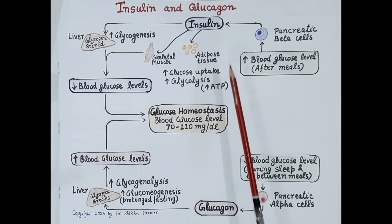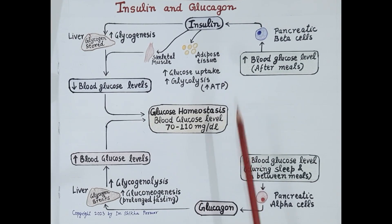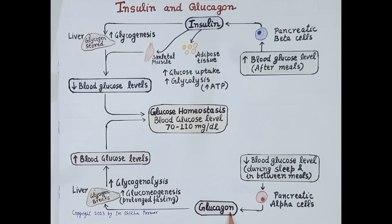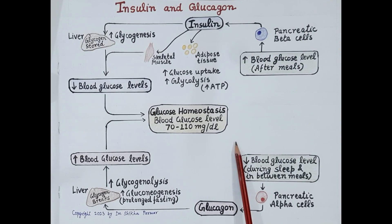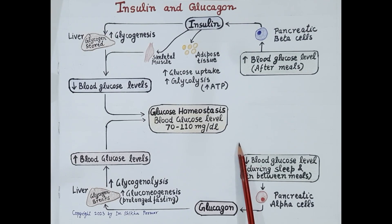So glucagon increases blood glucose levels and maintains glycemic control. Thus insulin and glucagon work in harmony, counterbalancing each other to stabilize blood glucose levels. Hope this clears your basic concept of insulin and glucagon. Thanks for watching.